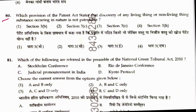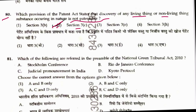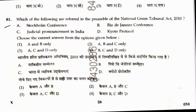Question 80: Which provision of the Patents Act states that discovery of anything living or non-living substance occurring in nature is not patentable? That is Section 3(c). Answer is 2. Question 81: Which of the following are referred to in the preamble of the National Green Tribunal Act? Stockholm Conference — yes; Rio de Janeiro Conference — yes; traditional pronouncements in India — yes; Kyoto Protocol — no. So A, B, C only. Answer is 2.